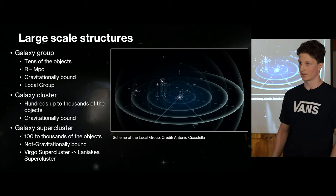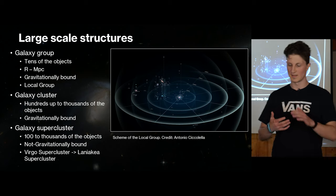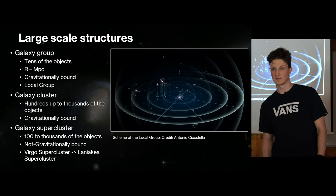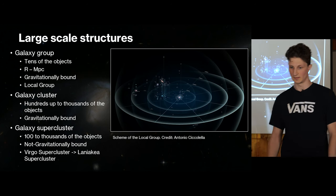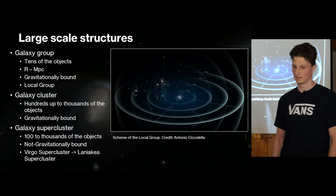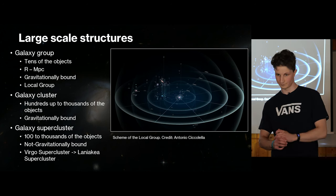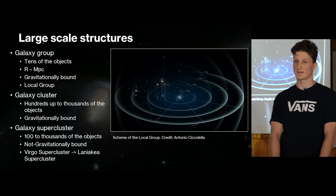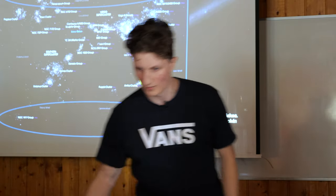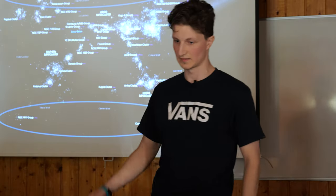Then we have galactic clusters. Our galaxy is not part of galactic clusters because galactic clusters are structures which contain hundreds up to thousands of galaxies but they are still gravitationally bounded. The largest structures are the superclusters which are not bounded and there can be hundreds of thousands of galaxies in such structures. We are part of the Virgo supercluster which is a sub-part of the larger Laniakea supercluster which can be seen here. And we are here, so a relatively small group.